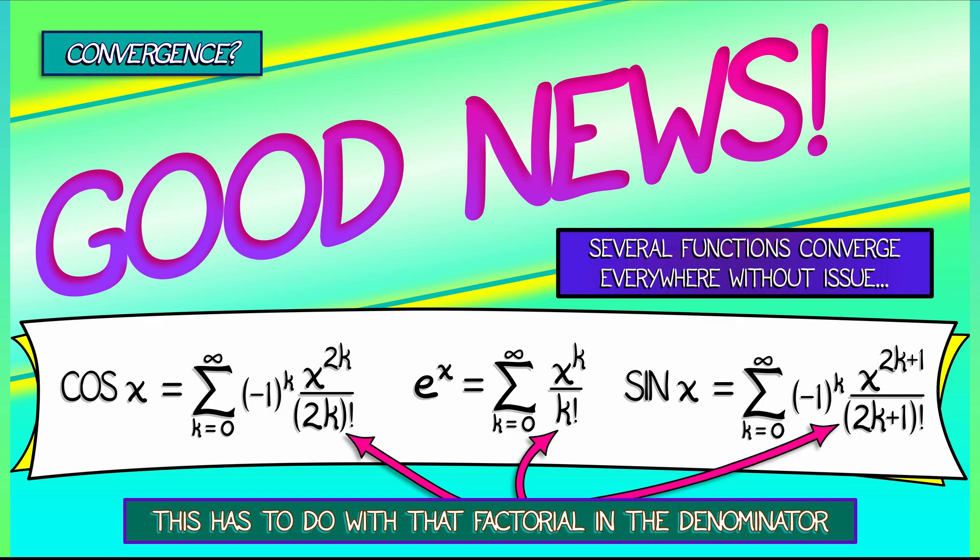Now, that may seem a little weird. We're going to come back to that when we get to the very end of our story over in volume four. But for now, what I want you to know is that e to the x, cosine of x, sine of x, these are all golden.